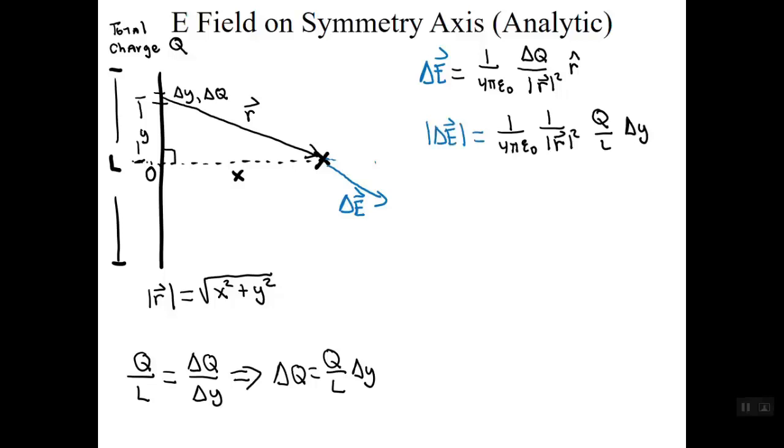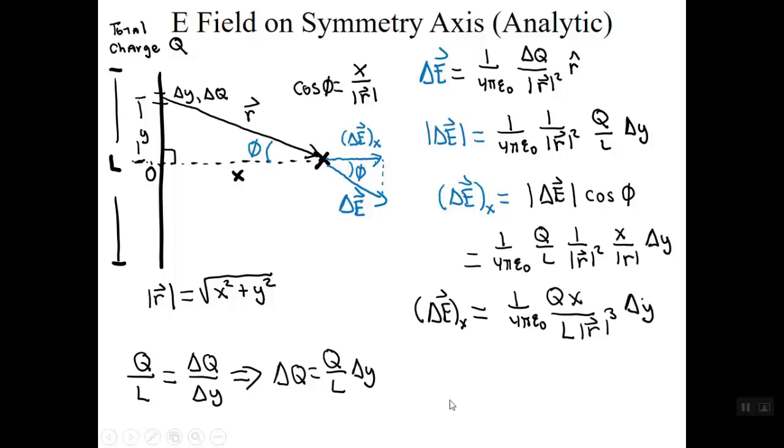Now, let's recall that for this observation location on the symmetry axis, we only need the components of delta E parallel to this axis. Here, that's the x component of delta E. Here's how we can find the x component. Notice that the vector delta E makes an angle of phi with respect to the x axis. Phi is also an angle in the right triangle we looked at earlier. Moreover, the cosine of this angle is just the adjacent side over the hypotenuse, or x over the magnitude of vector R. This is exactly the trig function we need because, for this problem, the magnitude of vector delta E times the cosine of phi is the x component of delta E. So, here's the expression for that.